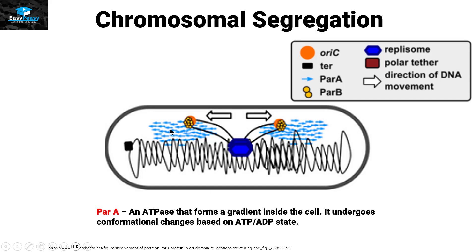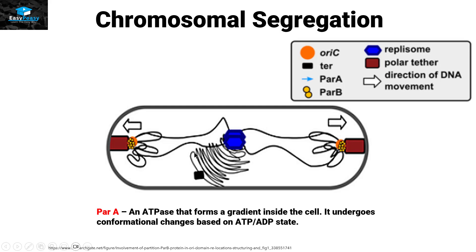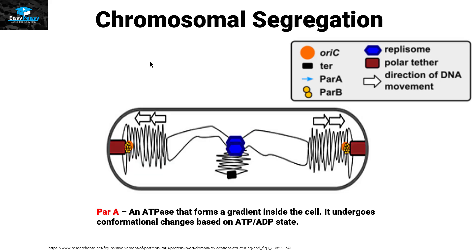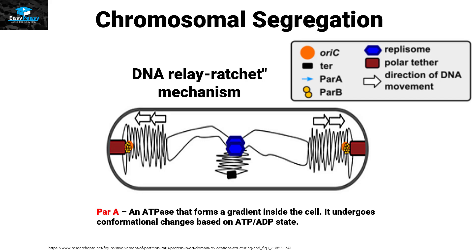With the help of the parA protein creating a gradient in the cell, the cell develops a polar tether at the ends. The origin of replication with parB protein is now at the poles, and the replisome remains in the center continuing to replicate DNA, while chromosomal segregation occurs simultaneously. When replication is nearly complete, the chromosomes are already at their respective poles, and when DNA replication finishes, chromosomal segregation is also done. This process is also called the DNA relay ratchet mechanism.